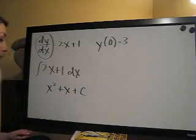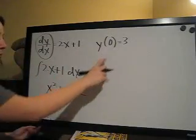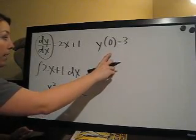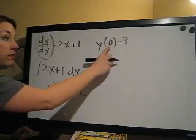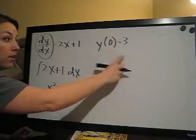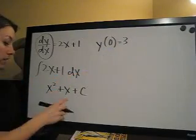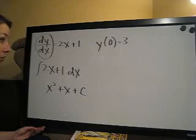The way that we're going to do that is use this condition here. And what this means is, when you plug in 0 for x, the answer you get out is 3. So basically, they're giving you a point that satisfies this function, and all you have to do is plug it in.